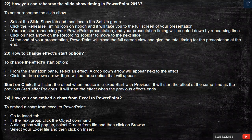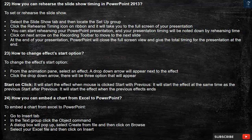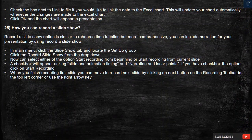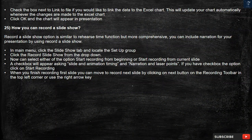Question 24: How can you embed a chart from Excel to PowerPoint? To embed a chart from Excel, go to the Insert tab. In the Text group, click the Object command. A dialog box will pop up — select Create from File and then click Browse. Select your Excel file and then click Insert. Check the box next to Link to File if you would like to link the data to the Excel chart. This will update your chart automatically whenever changes are made to the Excel chart. Click OK and the chart will appear in the presentation.